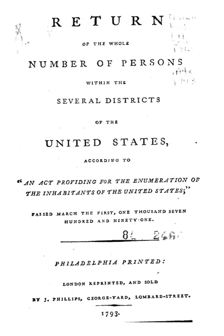The 1790 United States Census was the first census in the history of the United States. The population was recorded as 3,929,214 as of Census Day, August 2, 1790, as mandated by Article 1, Section 2 of the United States Constitution and applicable laws. The law required that every household be visited, that completed census schedules be posted in two of the most public places within each jurisdiction, and that the aggregate amount of each description of persons for every district be transmitted to the president. U.S. Marshals were responsible for governing the census.